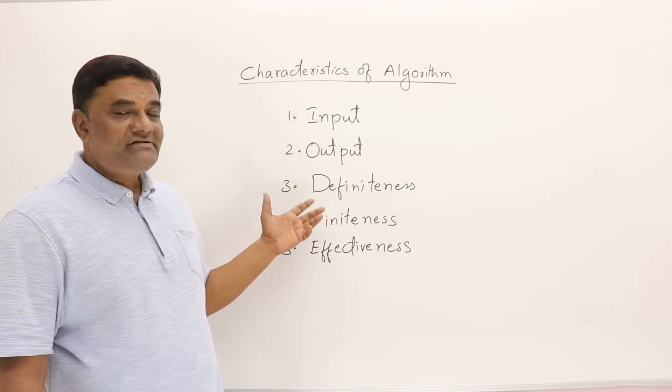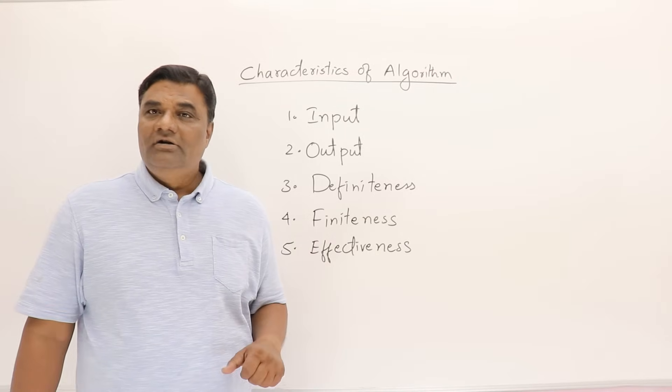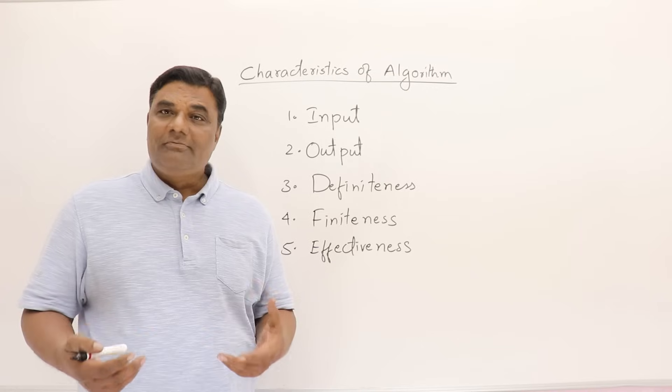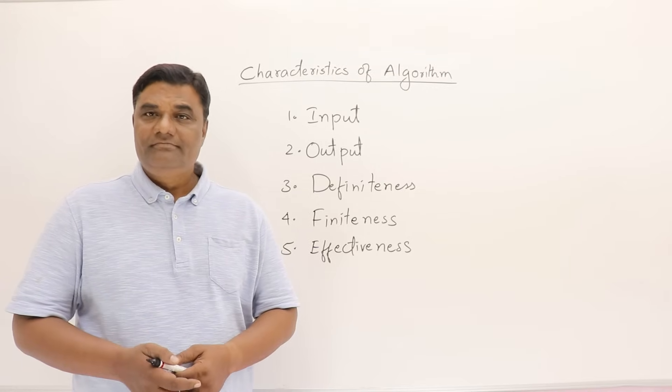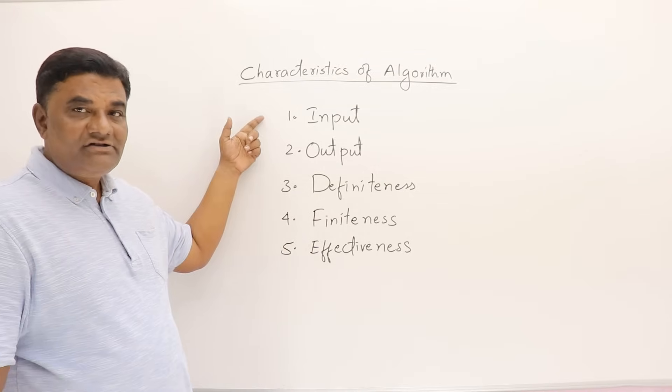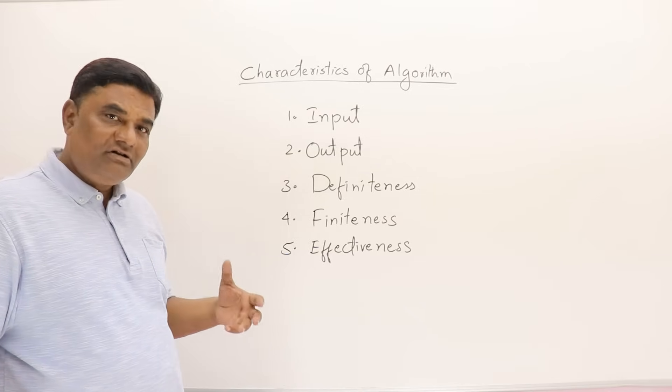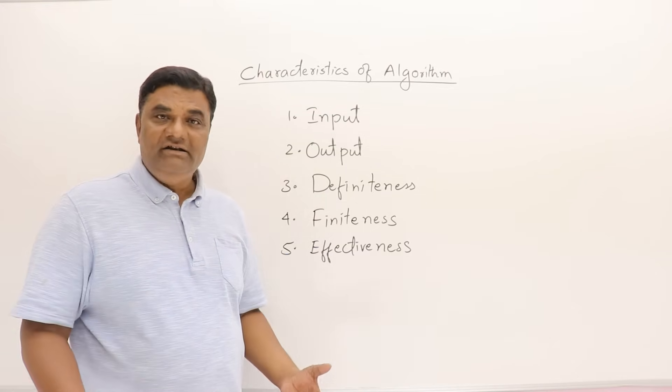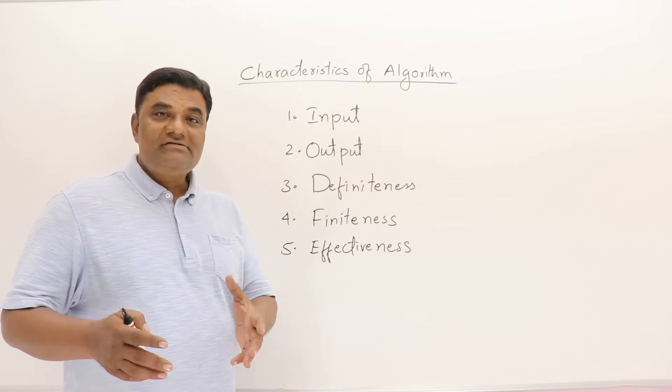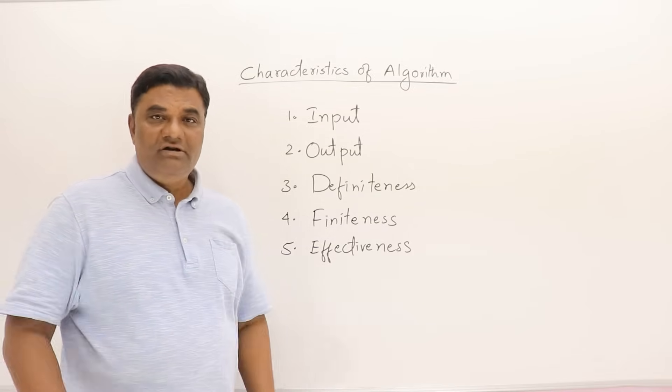In this video, we'll discuss the characteristics of an algorithm. What are the properties of an algorithm? First, an algorithm must take some input. Some algorithms may not take any input, but an algorithm can take zero or more inputs.